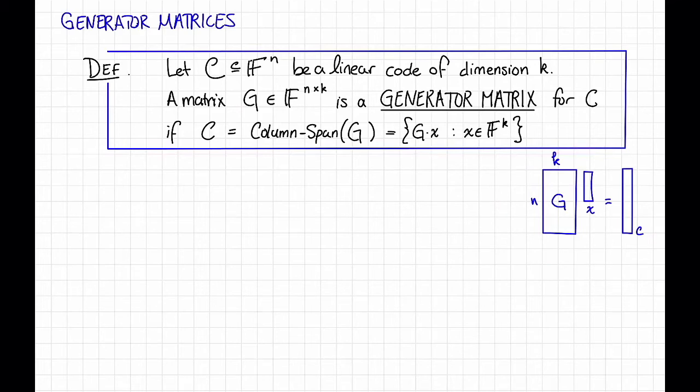One observation is that any linear code has a generator matrix. In particular, we can just take any basis for C, since it's a subspace of f to the n, and take those basis vectors and put them as the columns of G. And that'll do.